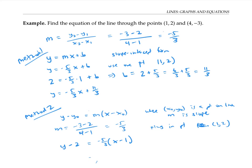Notice that these two equations, while they may look different, are actually equivalent. Because if I distribute the negative five thirds, and then add the two to both sides, I get the same equation as above.